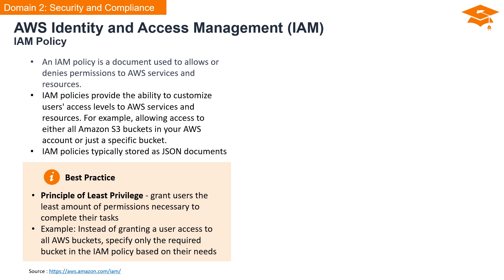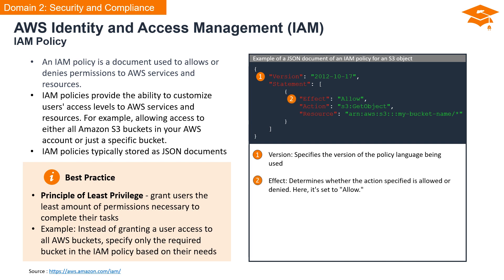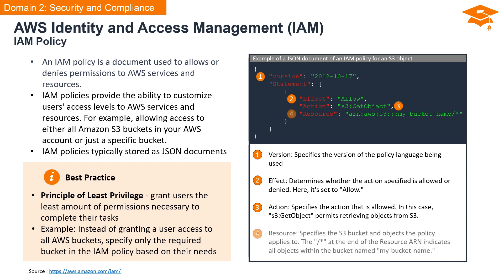A best practice in IAM policy management is the principle of least privilege — granting users the minimum permissions required to accomplish their specific tasks. Here is an example of a JSON document for an IAM policy that grants access to an S3 object. Key elements include: the Version element specifying the policy language version; the Effect element set to 'Allow'; the Action element specifying 'S3:GetObject' to permit retrieving objects from S3; and the Resource element specifying the S3 bucket and objects the policy applies to, with a wildcard indicating all objects within the bucket named 'my-bucket-name'.